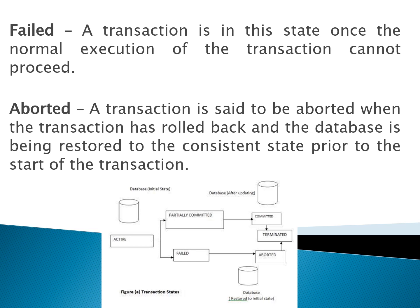Aborted state: a transaction is said to be aborted when the transaction has rolled back and the database is being restored to the consistent state prior to the start of the transaction. When the transaction has been aborted, whatever data was present before the start of the transaction, the database will be brought back to that same state — the values will not be changed in the database.